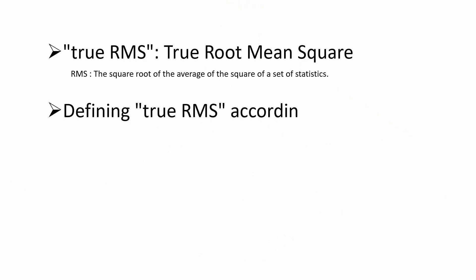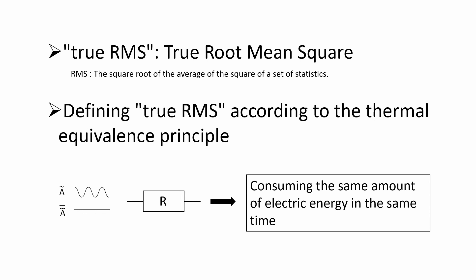True RMS means true root mean square. True means real and correct. RMS is the square root of the average of the square of a set of statistics, referred to as the root mean square, also called the effective value. The multimeter squares the average of the squared data of the different values it records during the measured time, which is called true RMS. When we define the effective value according to the principle of thermal equivalent, making alternating current and direct current pass through the same resistance respectively, if they both consume the same amount of electric energy in the same time or generate the same joule heat, then the value of direct current is regarded as the RMS value of the alternating current.